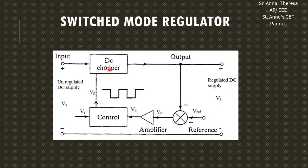The control circuit is used to get the regulated DC output voltage. For controlling purposes, we can use any method — for example, we can use the pulse width modulation control technique, otherwise also called as constant frequency control, which comes under the time ratio control.